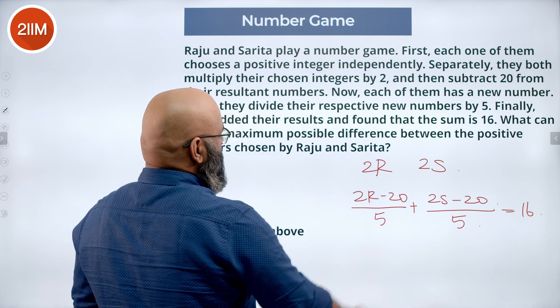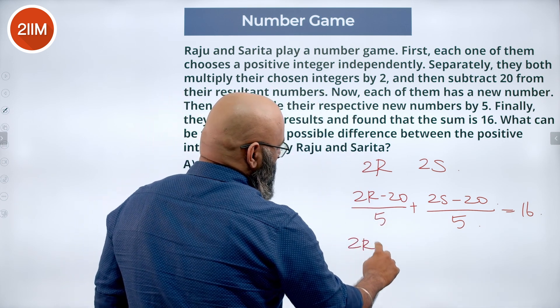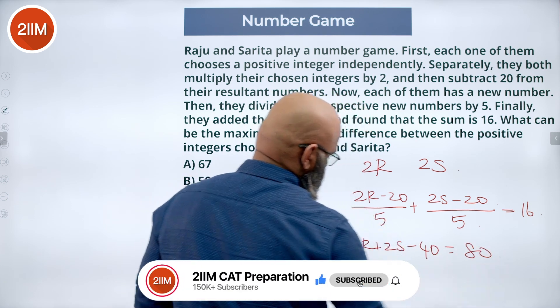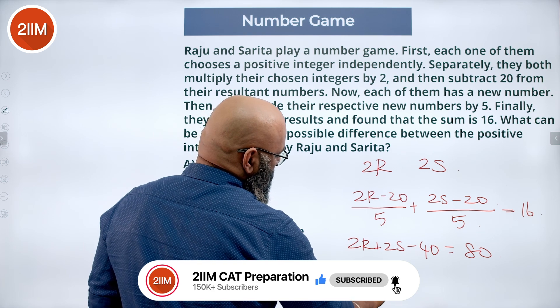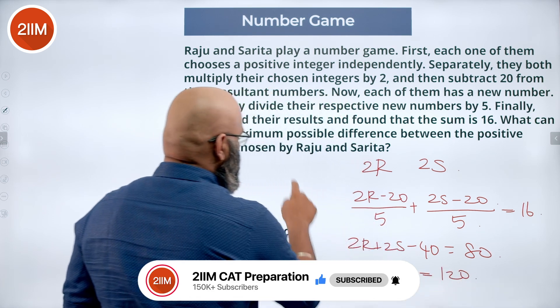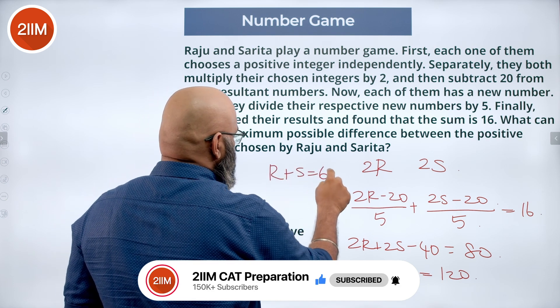So we add this we get 2R plus 2S minus 40 is equal to 80. Or we have 2R plus 2S is equal to 120. Or I can say R plus S is equal to 60.